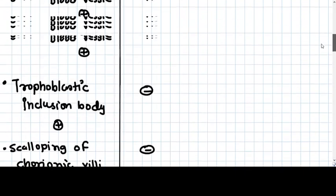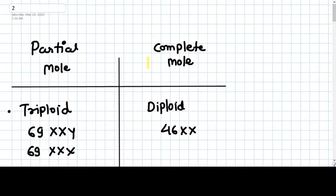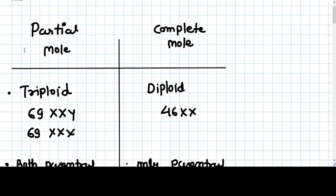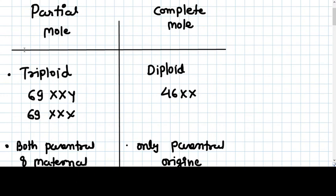Hello everyone. In this video, we are going to talk about the difference between partial mole and complete mole. This is the number two video of the trophoblastic diseases series. As we discussed in the pathophysiology, partial mole contains triploid genetic material, which can be 69XXY or 69XXX. In complete mole, we have diploid genetic material.